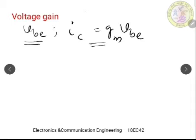The BJT acts like a voltage controlled current source. This current can be made to flow through a resistor Rc — the collector resistor Rc as we have seen in our circuit. So now we can write the total collector voltage Vc, which includes both the DC as well as the signal component.